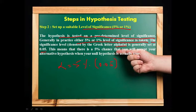This means there is a 5% chance that you will accept your alternate hypothesis when your null hypothesis is actually true. The level of significance, alpha, is also called Type 1 error — that is, when we reject a true null hypothesis. The probability of rejecting a true null hypothesis is known as the level of significance or Type 1 error, and it is equal to alpha.